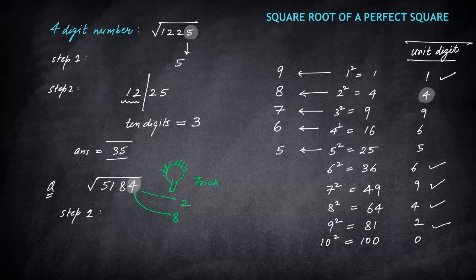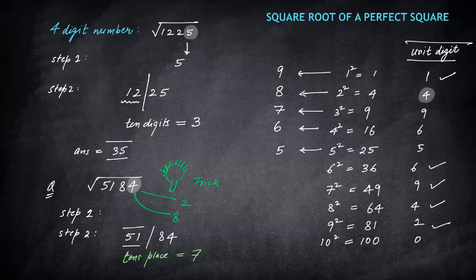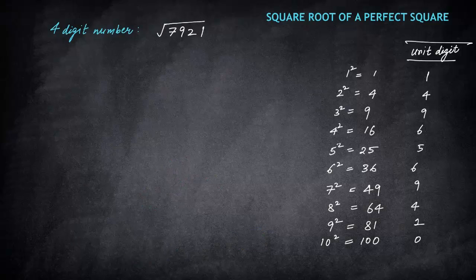Step 2: split 5184 — take 51. Since 51 is just above 49 (which is 7 squared), the tens place is 7. Step 3: multiply 7 × 8 = 56. Since 51 is less than 56, pick the smaller number from the pair — which is 2. The answer is 72, and 72 squared is 5184.